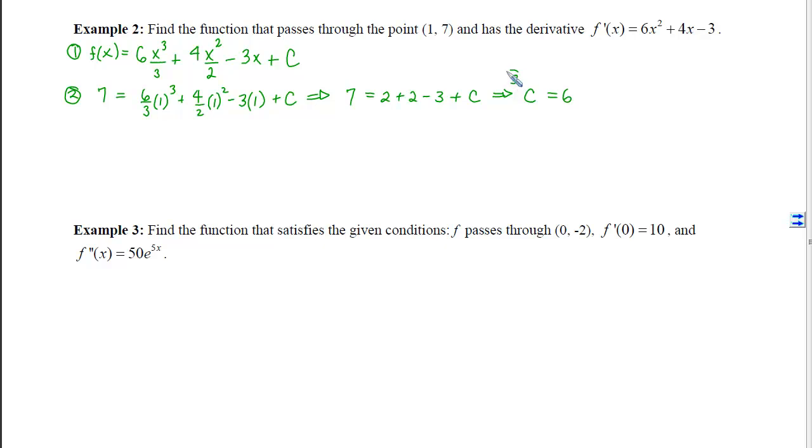So there's my third step. And my final step is I go back to my general antiderivative and I plug in my c. Notice we can double check this by plugging 1 in. I'll get 2 + 2 = 4 - 3 = 1 + 6 gives me 7, so it passes through the point. And if I take the derivative of this, I will get this back.